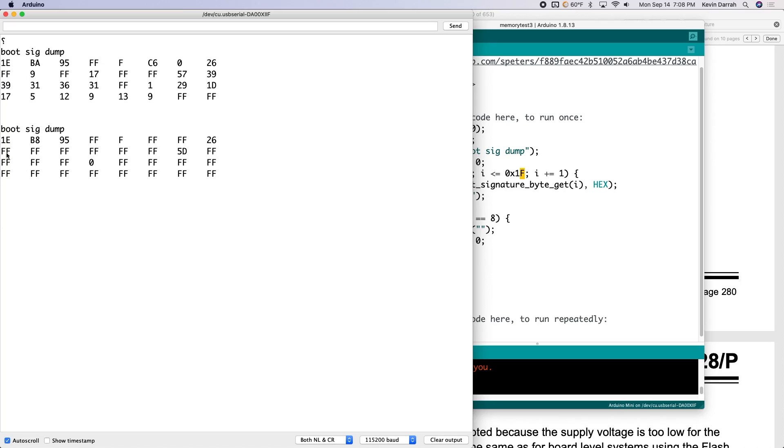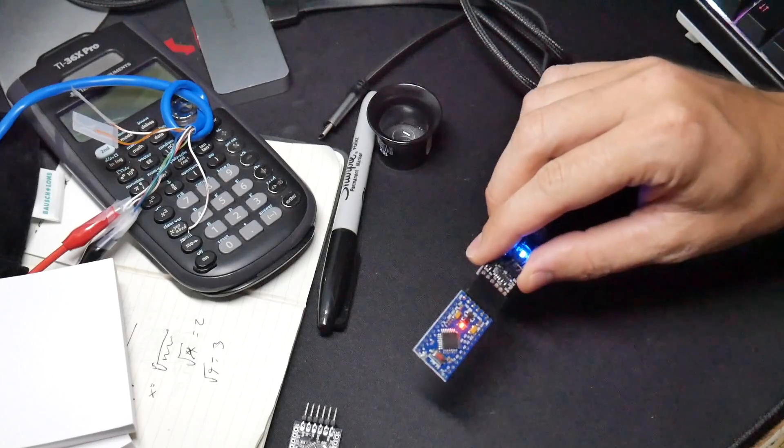So there you have it, you see now the second dump there, this is with the Pro Mini. And it's very interesting, it's very different from the genuine readout. So you see the signature is right, we've got 1E95 and F just as before. So the signature reads out fine. But everything else in here, even though it's reserved for future use, is different from the genuine part. And this has a date code of 2019.